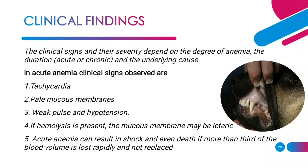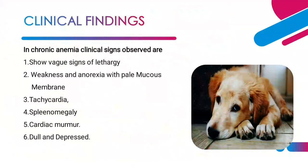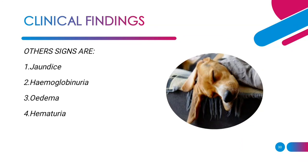Coming on to clinical findings. The clinical signs and their severity depend upon the degree of anemia, the duration — whether acute or chronic — and the underlying causes. In case of acute anemia, clinical signs observed are tachycardia, pale mucous membrane, weak pulse, and hypotension. If hemolysis is present, the mucous membrane may be icteric. Acute anemia can result in shock and even death if more than a third of the blood volume is lost rapidly and not replaced. In chronic anemia, there are vague signs of lethargy, weakness, and anorexia with pale mucous membrane, tachycardia, splenomegaly, cardiac murmur upon auscultation, and the animal may appear dull and depressed. Other signs include jaundice, hemoglobinuria, edema, and hematuria.